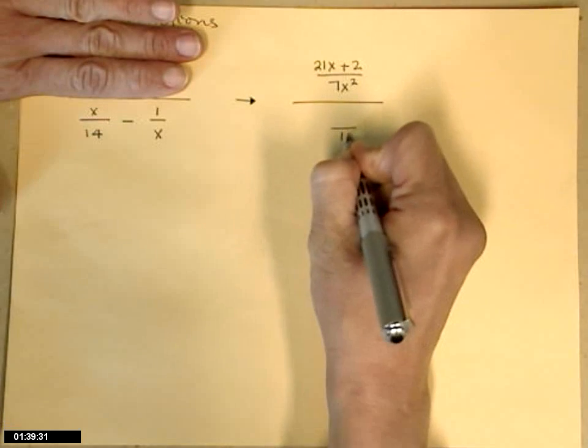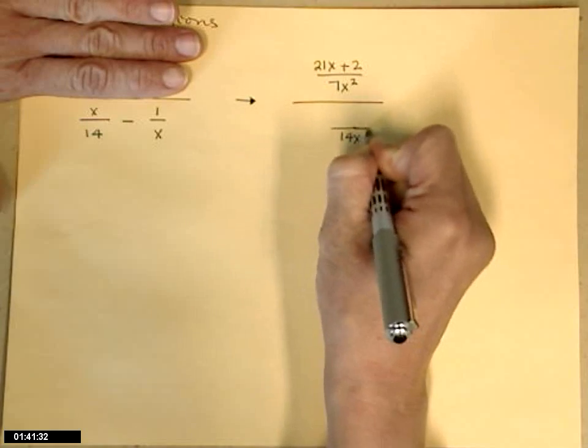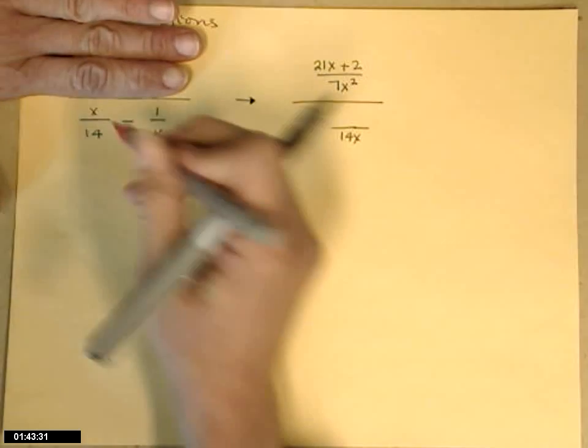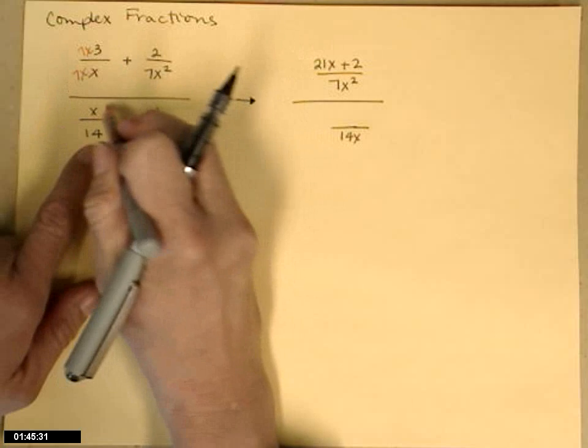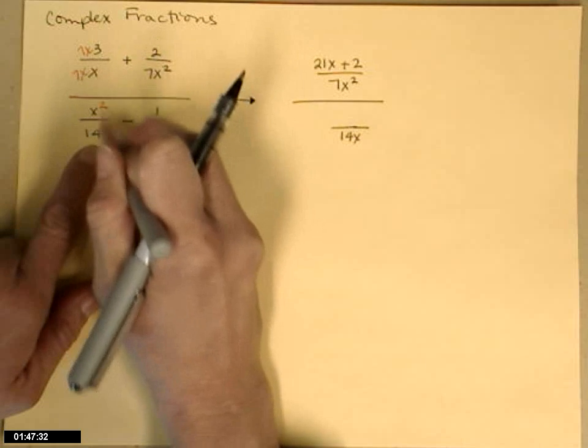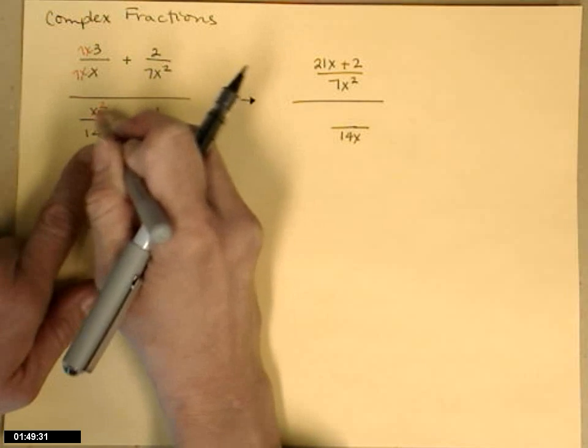We'll build up each fraction to have that. So the first one will be x squared, right? I'll need an x top and bottom in the top. It turns that x into an x squared.